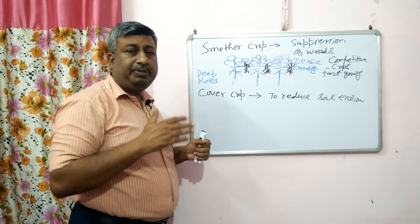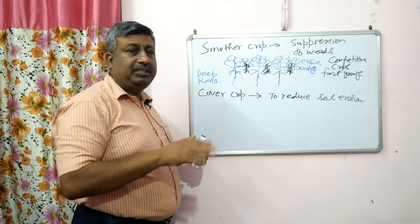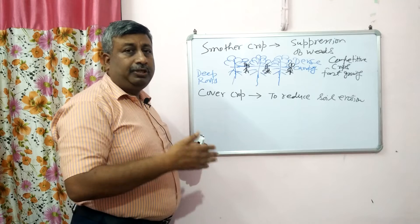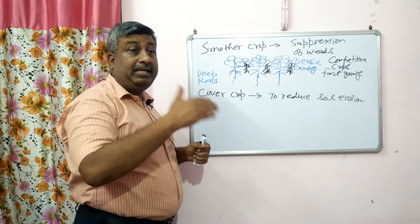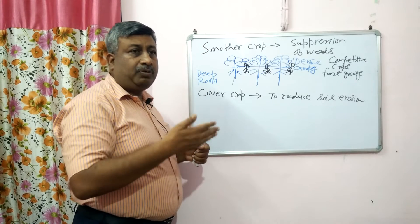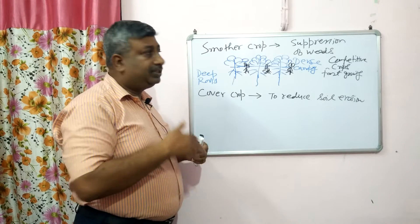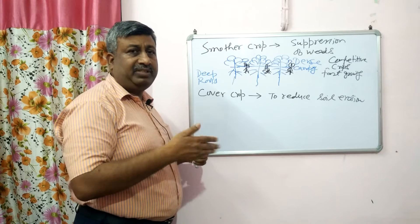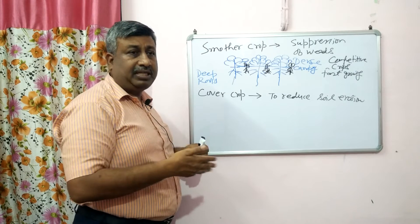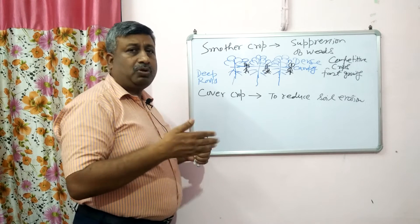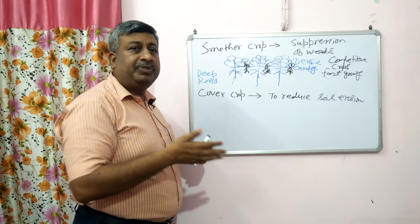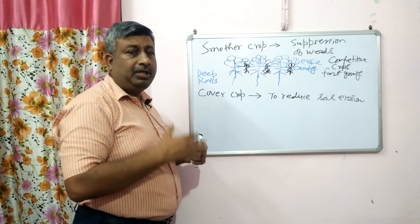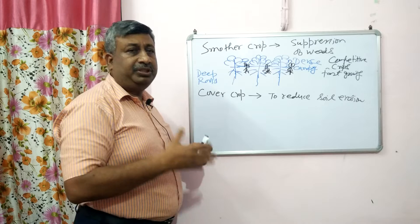When we grow such crops in the field, weed germination is less and their growth is poor, so their seed production is less. In the next season, weed growth will be less because their seed production is less, their biomass production is less, their root deployment is less, and their vegetative propagation is less. When we grow the smother crop over the years, the weed population becomes less. This is a good cultural practice to reduce weed infestation in the field.